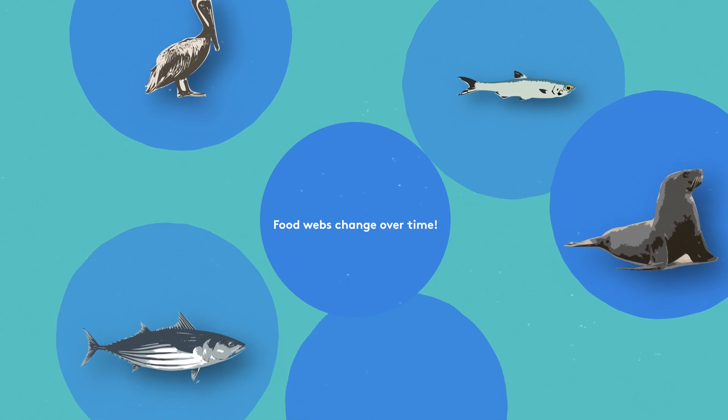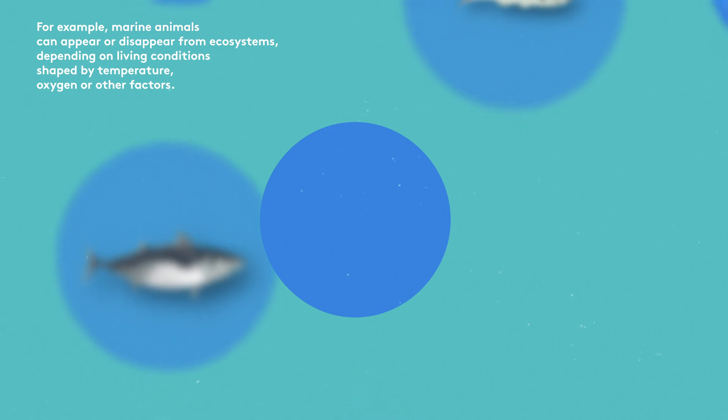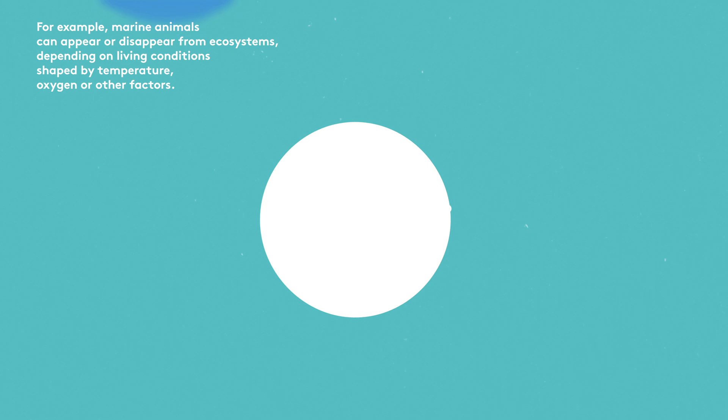Food webs change over time. For example, marine animals can appear or disappear from ecosystems, depending on living conditions shaped by temperature, oxygen or other factors.